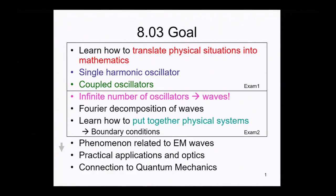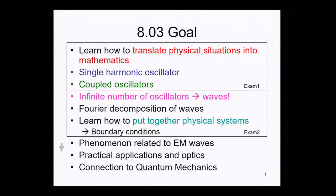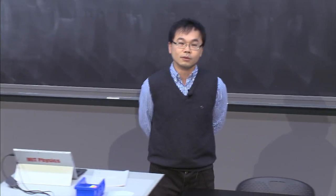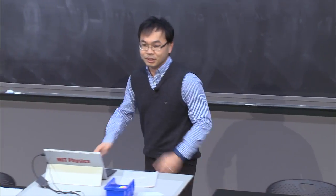We learned about Fourier decompositions of waves, and also about how to put together physical systems. In order to do that, you need to define boundary conditions. In the third part of the course, we have been focusing on many applications — for instance, phenomena related to electromagnetic waves and optics. We are pretty close to the discussion between wave and vibrations, and the future course 804 connects to quantum mechanics. If we have time, we will also talk about gravitational waves.